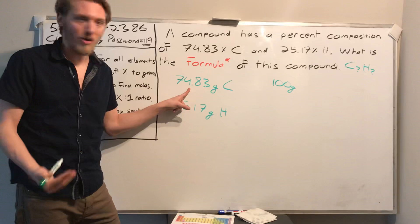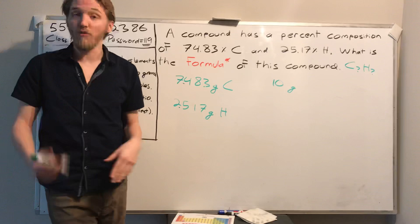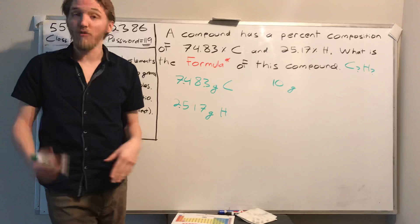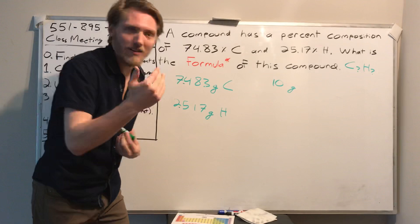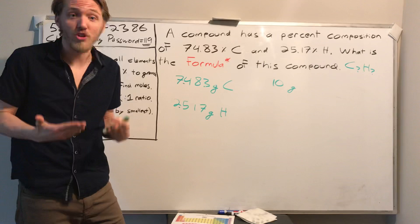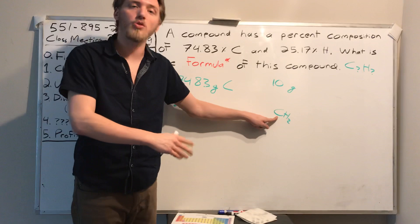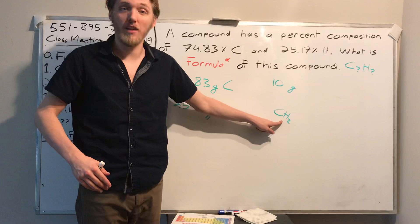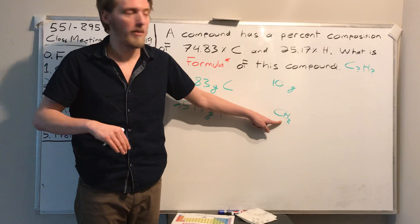We're allowed to make that assumption because it doesn't matter what mass we pick. Percent composition is an intensive property — the ratio of elements doesn't change no matter how much we have. Whether it's one molecule of CH2 or a million molecules or 87 million kilograms of it, we'd still have twice as many hydrogens as carbons. That ratio is fixed.